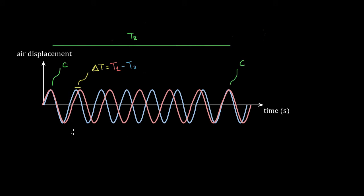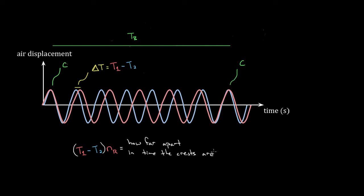Now we can say: if we want to know how far apart the two crests are in time at any given moment, take this difference in period and multiply by the number of cycles the red wave has gone through. So if the red wave has gone through three cycles, three times this difference tells us those peaks are spaced apart in time by that much. They start right on top of each other; after each successive cycle they drift further apart — after five cycles they're so far apart that the red wave is overlapping with the next blue peak.